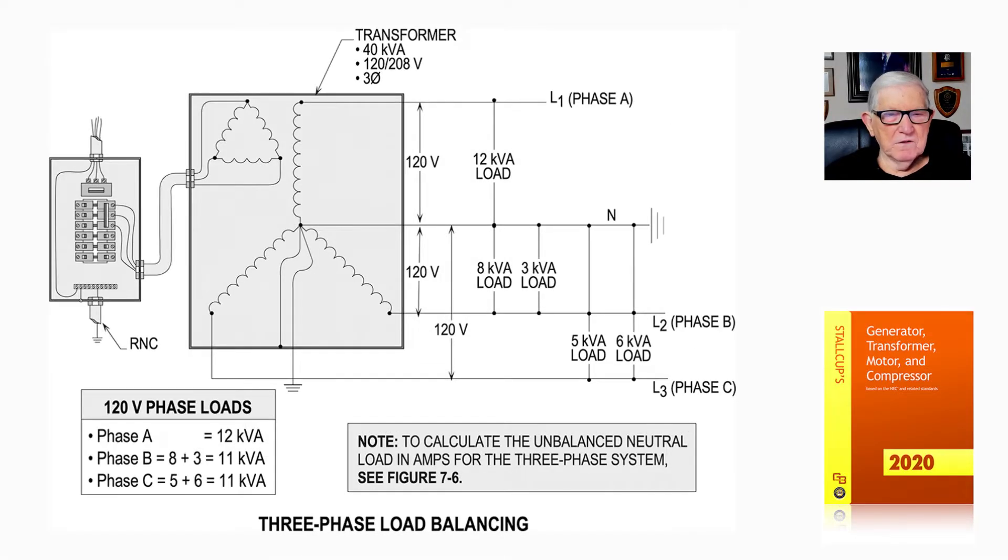Now let's take a look at Figure 7-12A and notice it's three-phase load balancing. When you review the loads, the 120-volt loads, simply looking at it in a more simple manner, phase A is 12 kVA, phase B is 8 plus 3, which is 11 kVA, and phase C is 5 plus 6, which is 11 kVA.